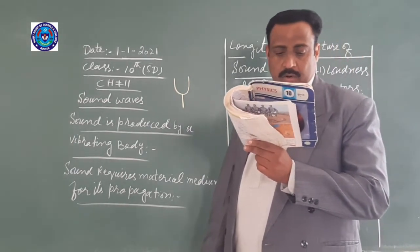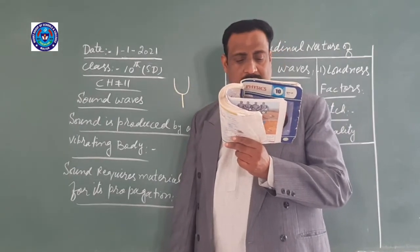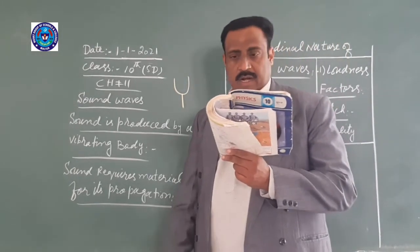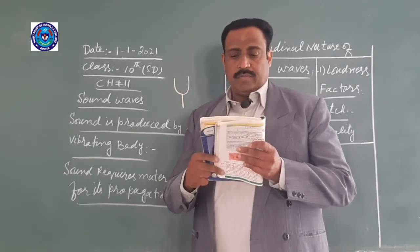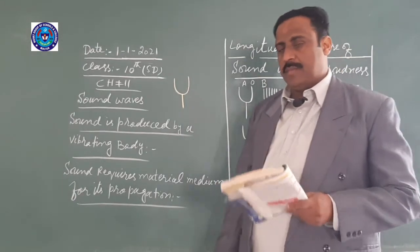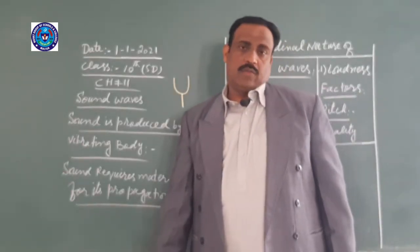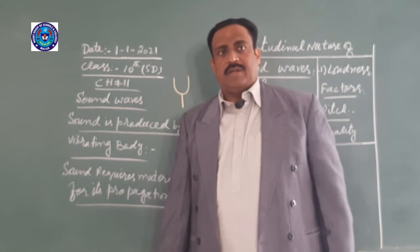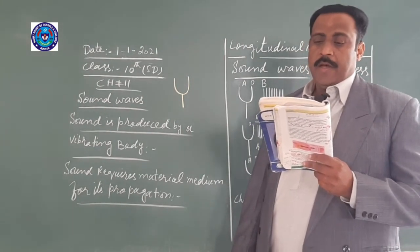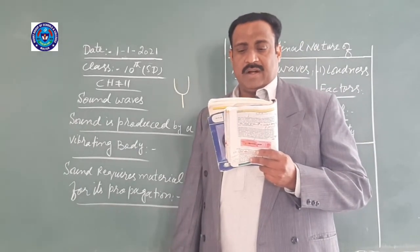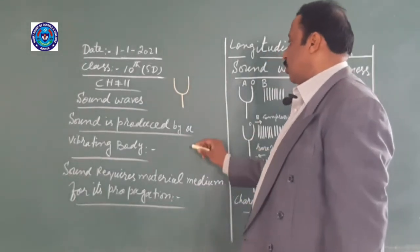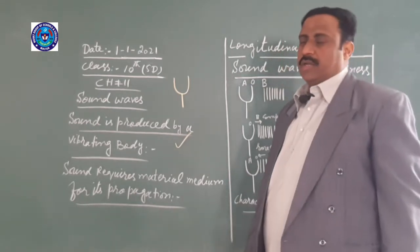We can hear the sound produced by tuning fork by bringing it near our ear. We can also feel the vibration by slightly touching one of the prongs of the vibrating tuning fork with a plastic ball suspended from a thread. Touch the ball gently with the prongs of the vibrating tuning fork. The tuning fork will push the ball and produce vibration. Now we dip the vibrating tuning fork into a glass of water. We can see the disturbance in the water. From this activity, we can conclude that sound is produced by a vibrating body. This means that vibration is necessary for sound production.